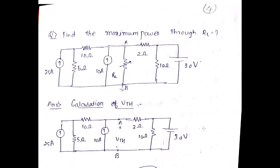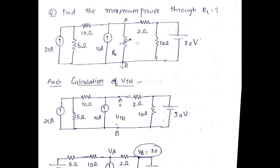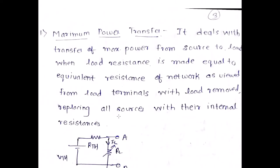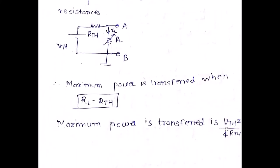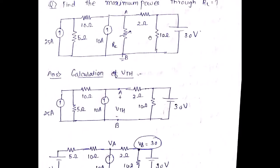Now let's take a numerical. The problem says: find the maximum power transfer through RL. Step one is to find Vth. We need Vth because the formula is Vth² / (4 × Rth), so we need both Vth and Rth. To find Vth, we keep the load resistance terminal open and find the open-circuit voltage Vth, also called V_ab.